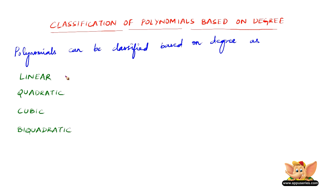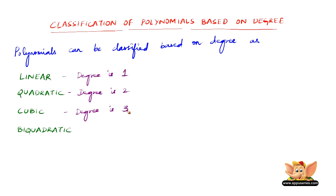Linear algebraic expression is the one in which the degree is 1. Quadratic algebraic expression is the one in which the degree is 2. Cubic algebraic expression is the one in which the degree is 3. And Biquadratic algebraic expression is the one in which the degree is 4.